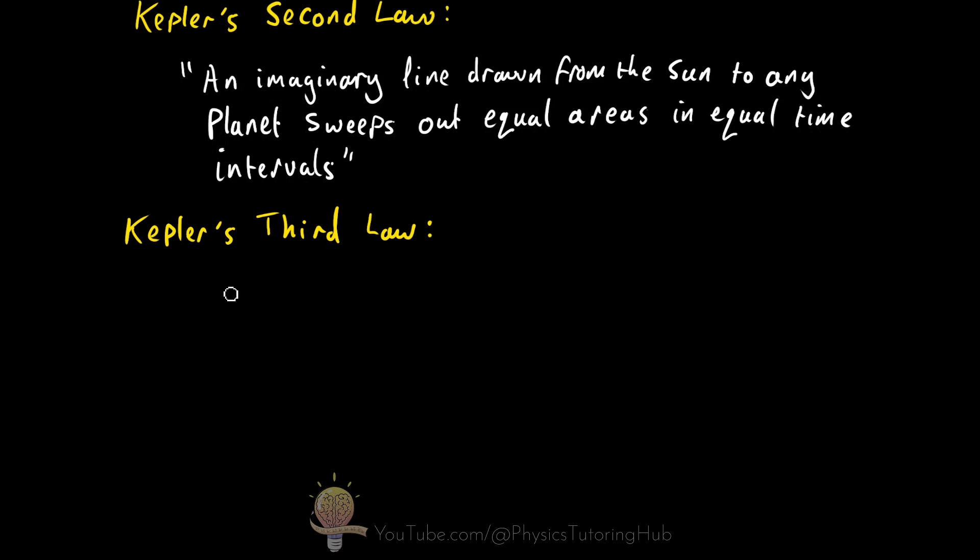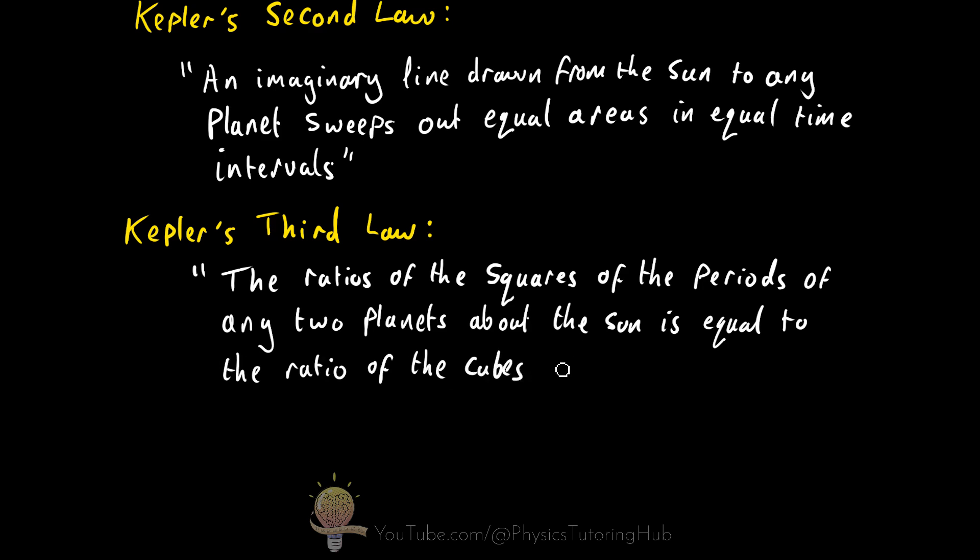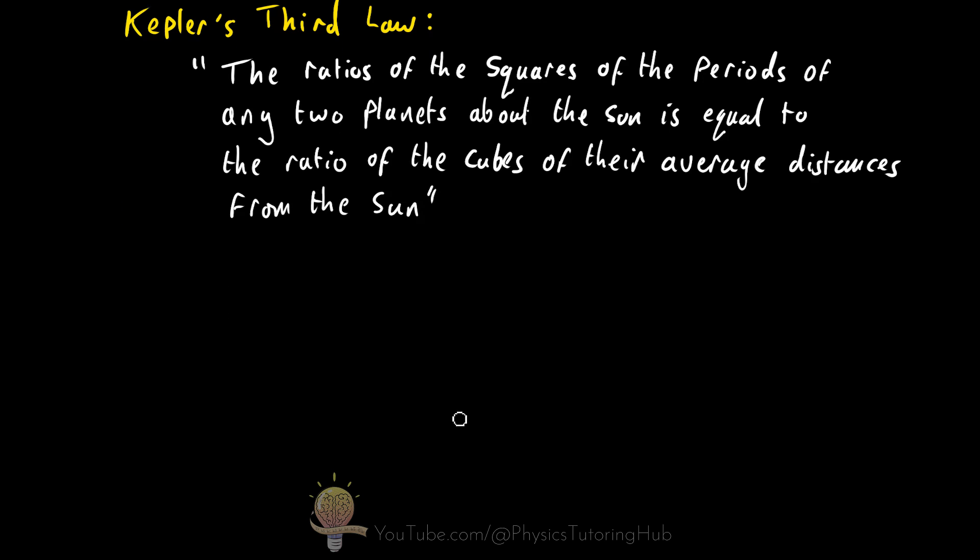So Kepler's third law can be written like this. The ratios of the squares of the periods of any two planets about the Sun is equal to the ratio of the cubes of their average distances from the Sun. Now what the hell does this mean? Now this can be really difficult to get your head around. So it's far easier to memorize this in equation form and then try and word out Kepler's third law in sentence form.